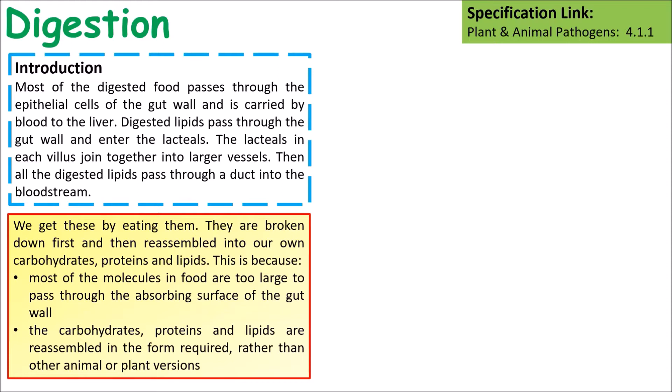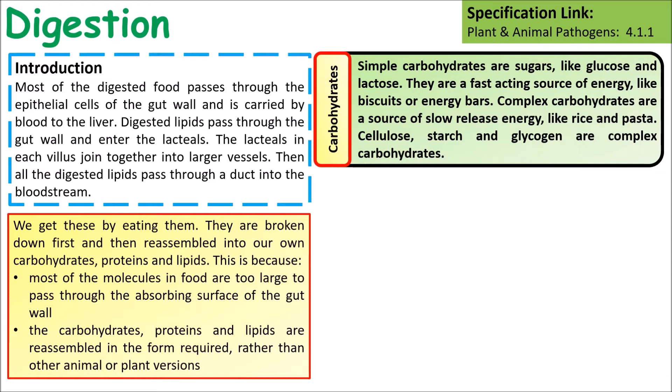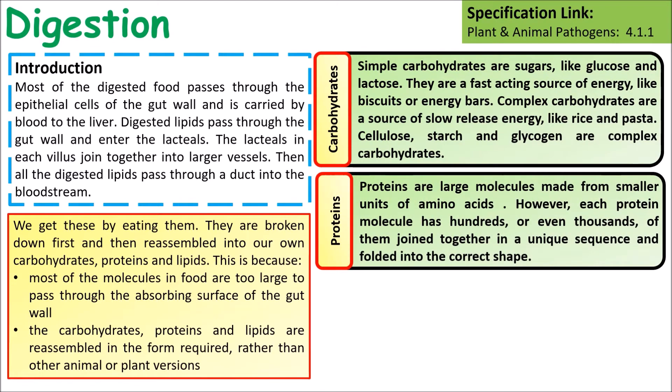We have carbohydrates, which can be simple sugars like glucose or lactose, or more complex like starch that we find in rice and pasta. Carbohydrates are important to the body because glucose is used in cellular respiration.